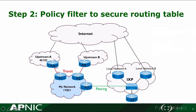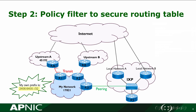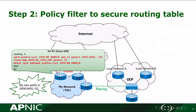Now we move to Step 2. We are going to build a policy filter to secure our routing table. My prefix applied from the registry is 2406:6400::/32. Normally we advertise this aggregated prefix on the internet. In Cisco CLI we first create an IPv6 prefix list with a name, permit the address, and there is a default deny at the end. Then we create a route map with a name and permit sequence, and inside the route map we match the prefix list we created. This is how you configure the policy filter.